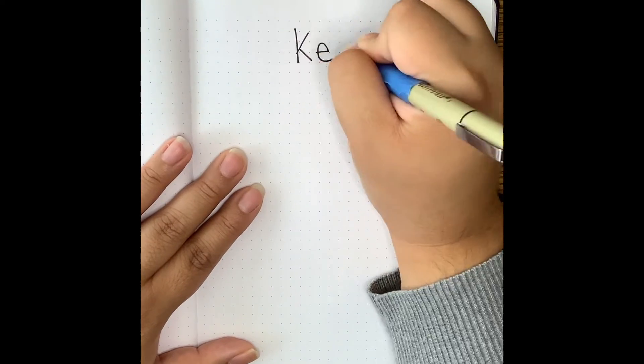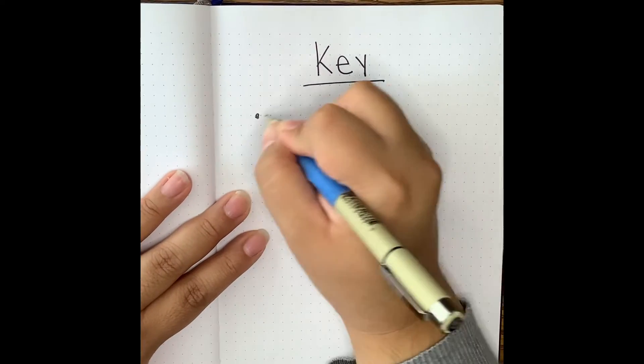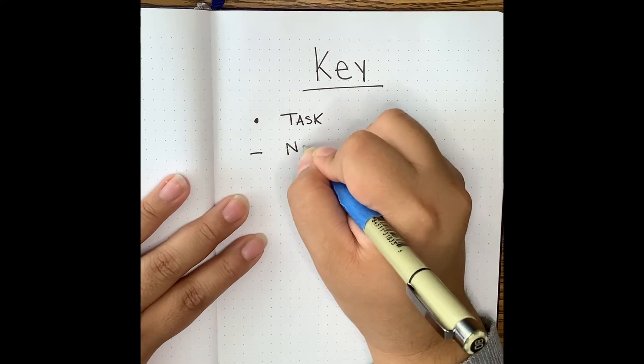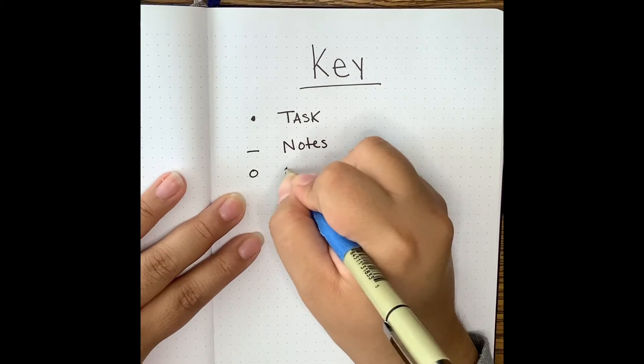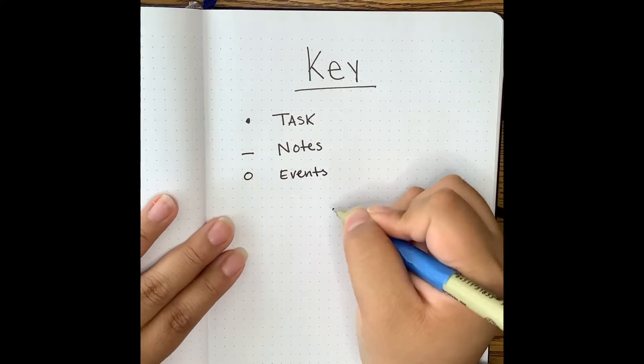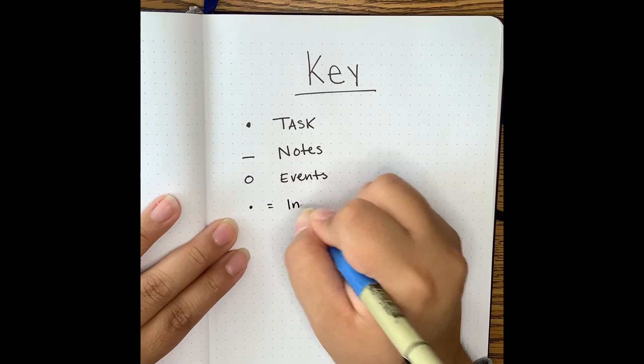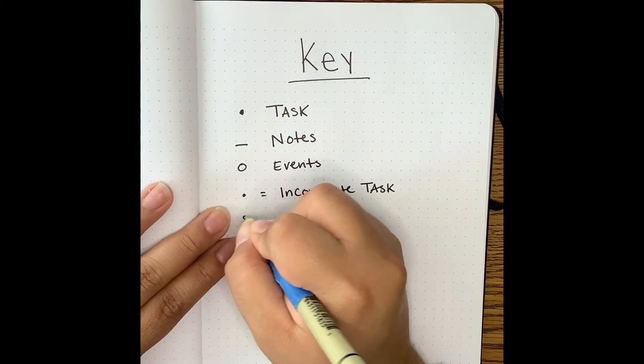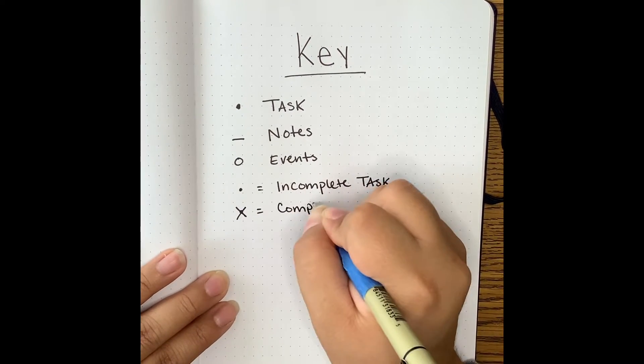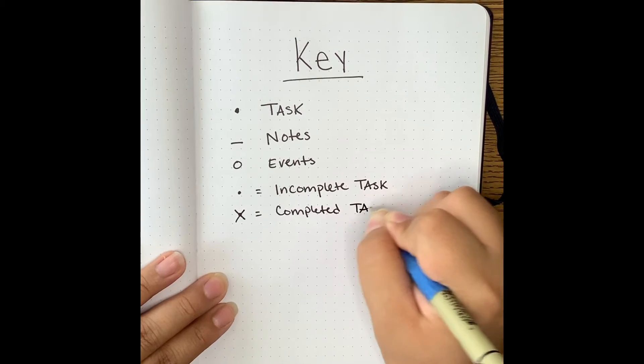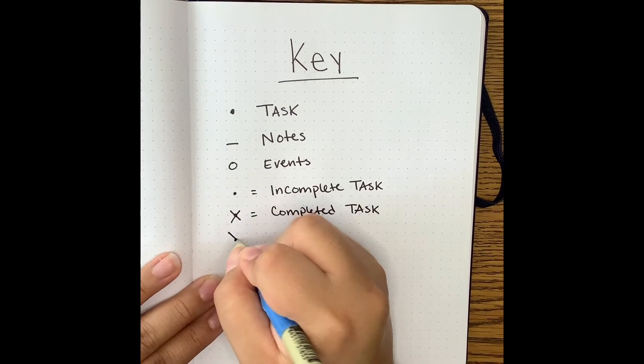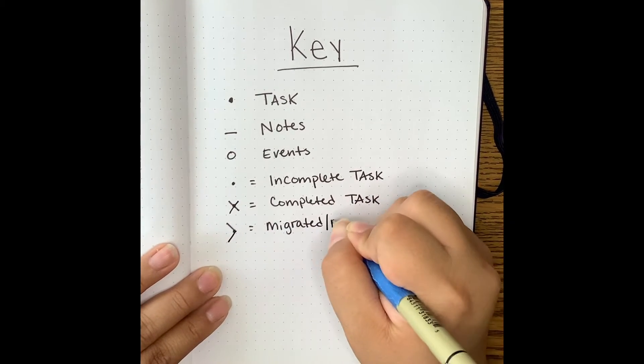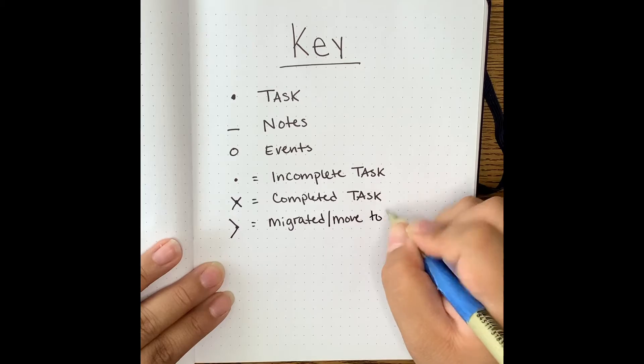The next page should be used as your key page. A key is important to create when you are just starting out because it helps you keep track of what certain symbols and bullets mean in your journal. It's a quick way to see what kinds of tasks, notes, or events you have coming up that you need to complete or focus on. This is a very basic key to help you get started, but please feel free to create your own. For example, a plain bullet means that this is an incomplete task that still needs to be addressed. A bullet with an X over it means you have successfully completed your task.